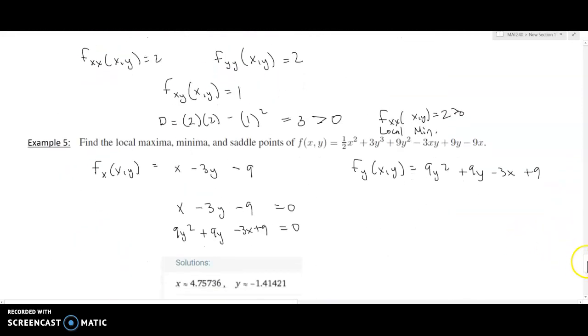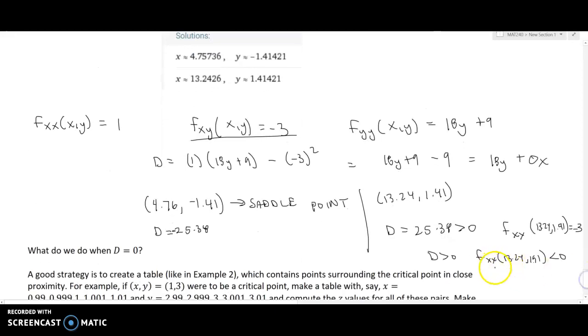So this point is a local max. It is possible that what we call local ends up being a global as well. But unfortunately, from the D test alone, we cannot state whether these are global. So we often just call them local no matter what. Let's go ahead and take a look at the graph of this to confirm our results.